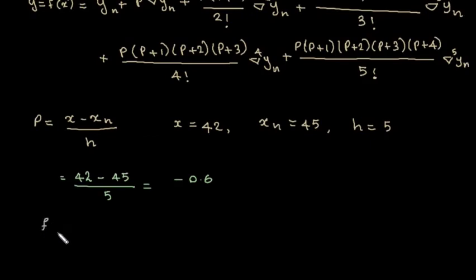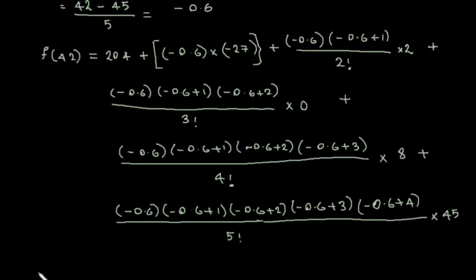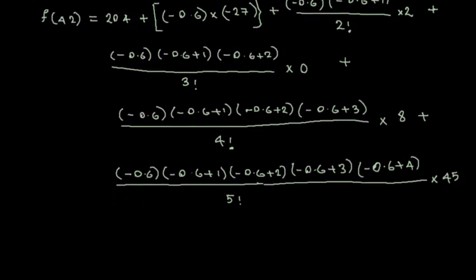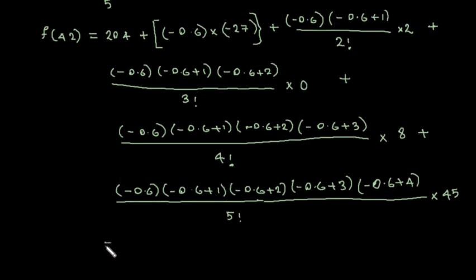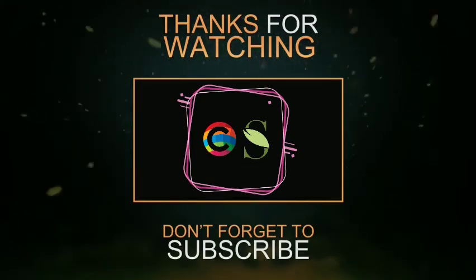So, f(42) equal to yₙ, which is 204, plus p is minus 0.6 into ∇yₙ. So f(42) equal to 219. Thank you.